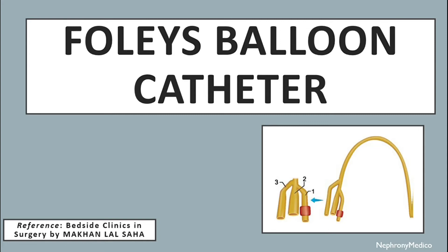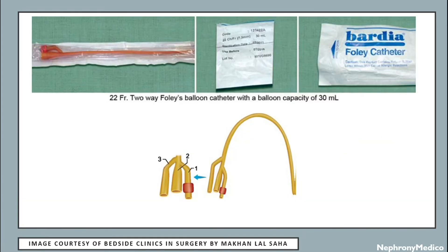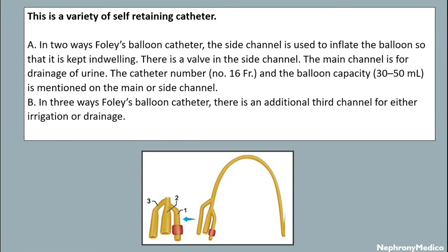Hello and welcome. Let's talk about the Foley balloon catheter. This is a picture and schematic diagram showing the Foley balloon catheter. This is a variety of self-retaining catheter. In a two-way Foley balloon catheter, the side channel is used to inflate the balloon so that it is kept indwelling. The main channel is for drainage of the urine.